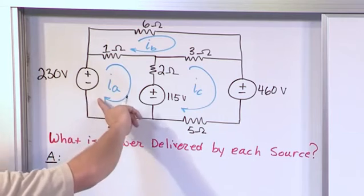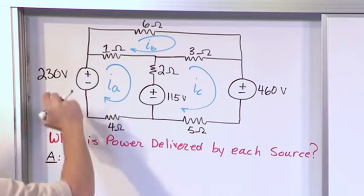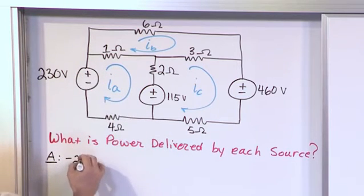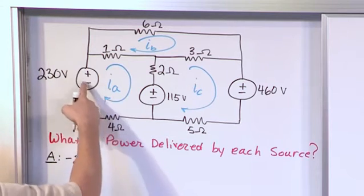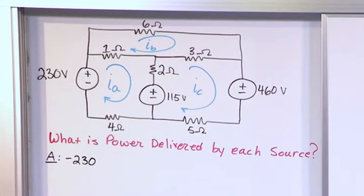So let's go here. I'm traveling through from negative to positive, so that's going to be a negative 230. We always treat voltages negative if we go from negative to positive, all right?